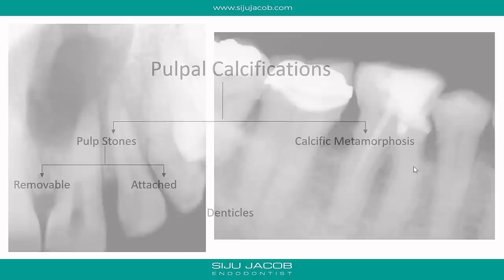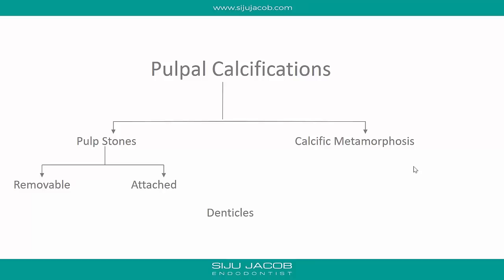When we divide pulpal calcifications for clinical purposes, I'd like to divide them into pulp stones and calcific metamorphoses. Pulp stones are quite common in clinical practice, but we are mostly concerned about calcific metamorphoses. Pulp stones can be divided into removable and attached. Denticles are a separate histological entity but not that significant clinically, so we'll focus on pulp stones and mostly on calcific metamorphoses.